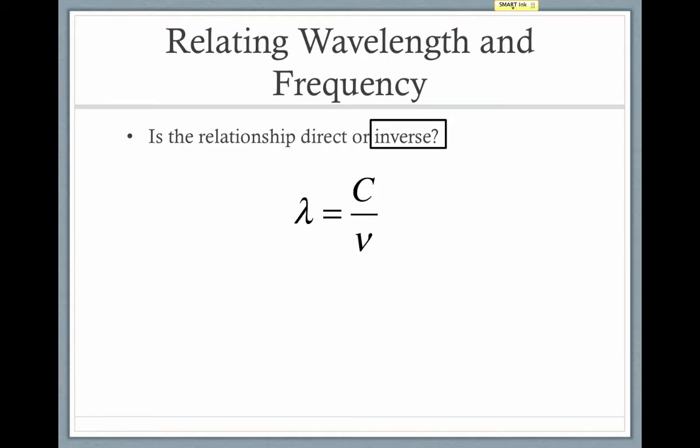We can relate this using an equation. This equation mirrors the inverse relationships we looked at with the gas laws. Here, we have lambda representing wavelength. C is the speed of light, and that's a constant. You'll always be given that, 3 times 10 to the 8th meters per second.